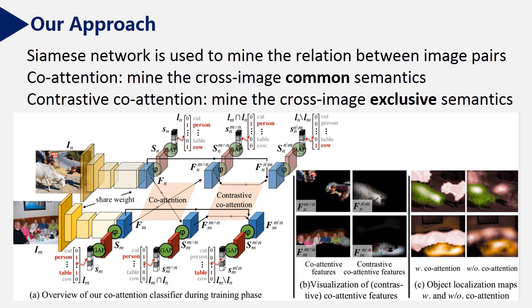We first input the image through a backbone and then co-attention module, followed by contrastive co-attention module. For this example, there are cat and person in the image im, the upper one, and there are person and table in the image in, the down image. So the common class between two images is the person. And our co-attention module can capture the common semantics, which is person in this case.